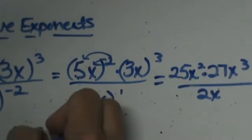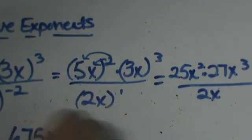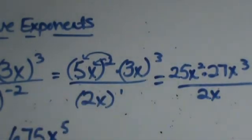So let me just write that down: 675 x to the fifth all over 2x to the first.